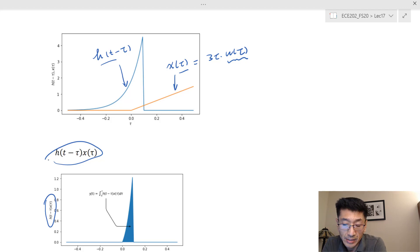What this really means here is you are integrating this curve. This curve, the way we get this curve is multiplying h(t minus tau) with x(tau). The waveform we got from the original h(t).